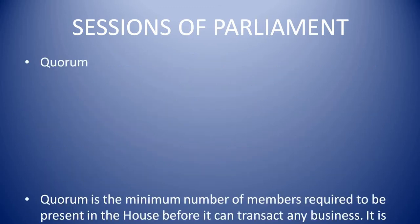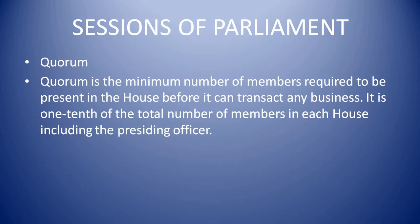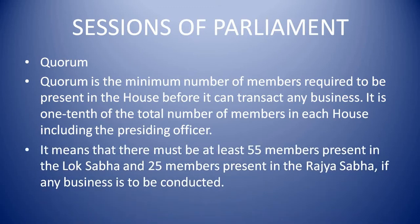Quorum: Quorum is the minimum number of members required to be present in the house before it can transact any business. It is one-tenth of the total number of members in each house including the presiding officer. This means there must be at least 55 members present in the Lok Sabha and 25 members present in the Rajya Sabha if any business is to be conducted.